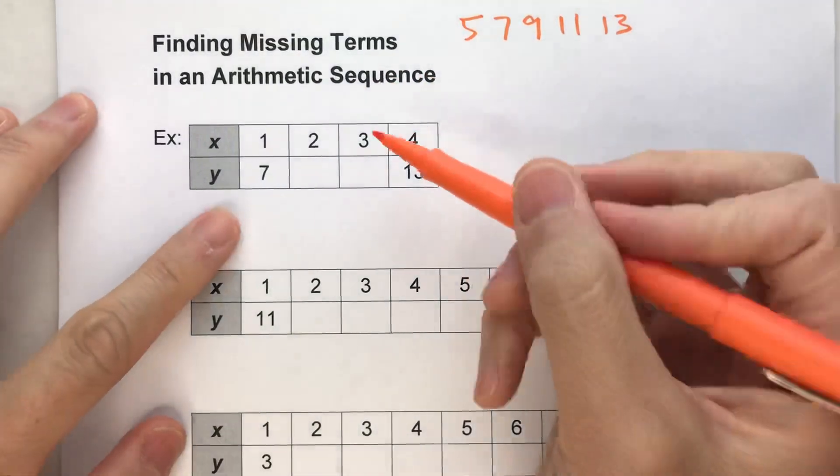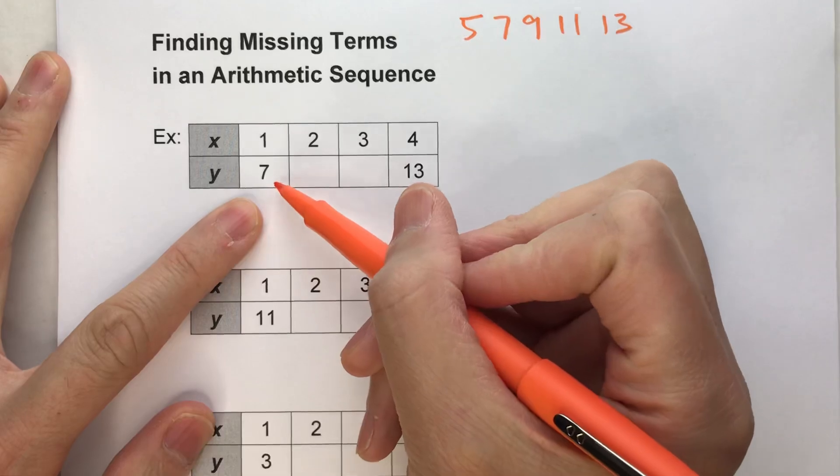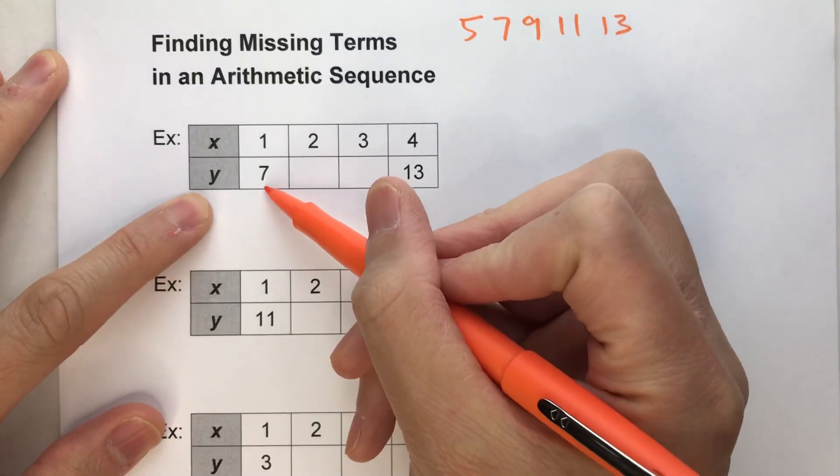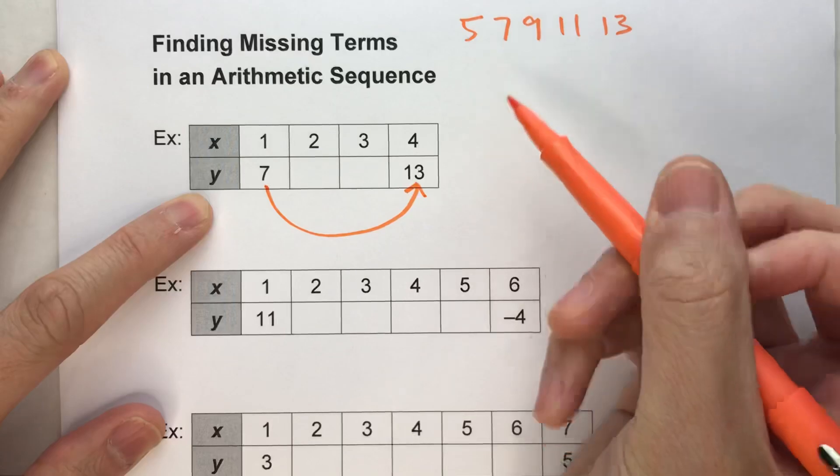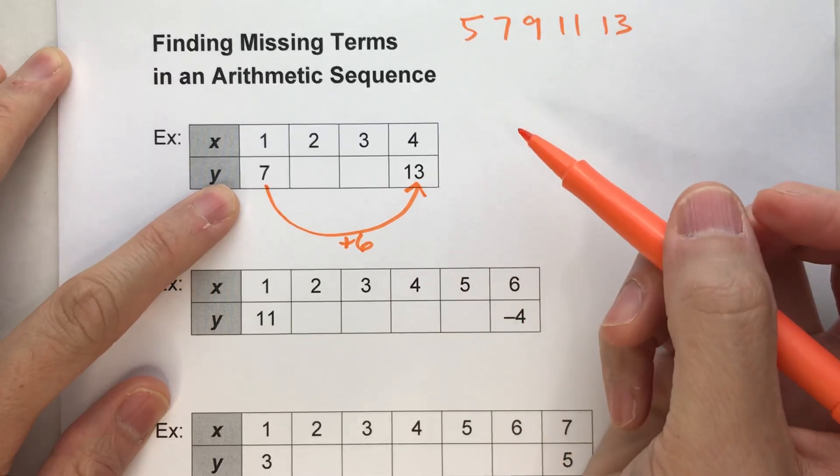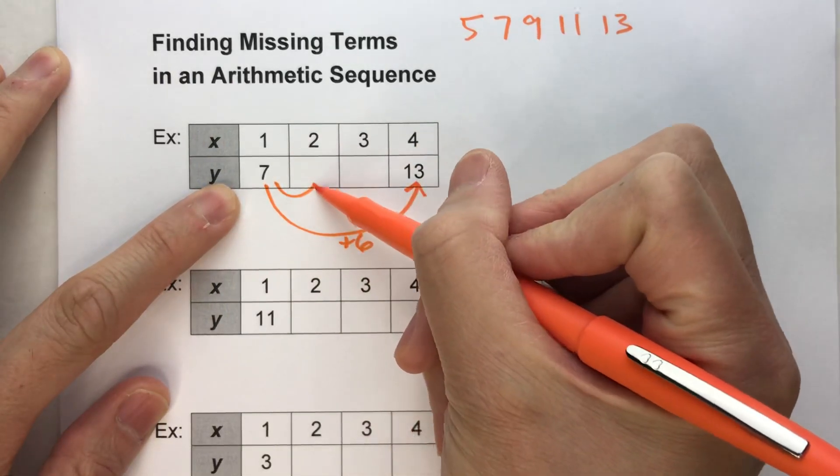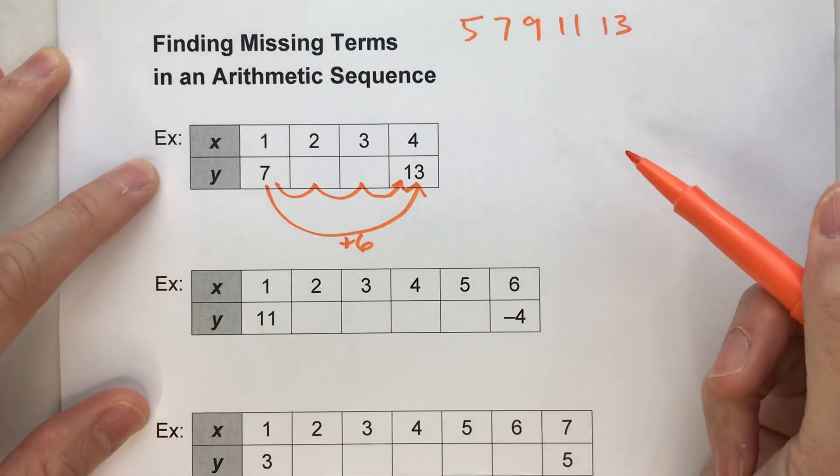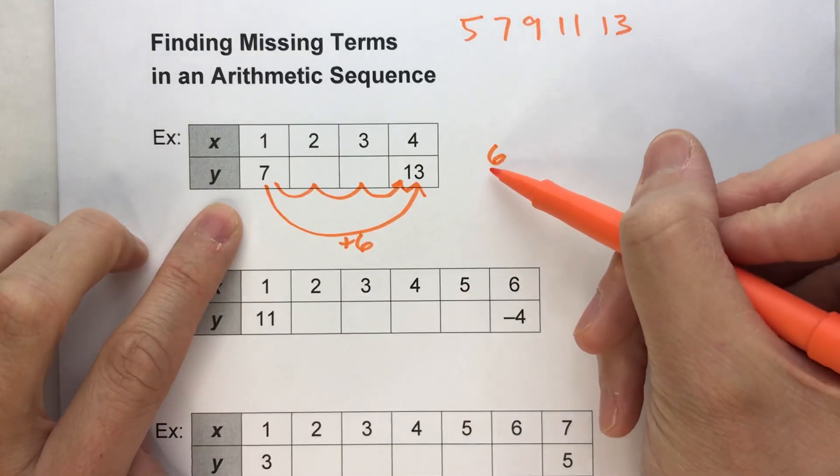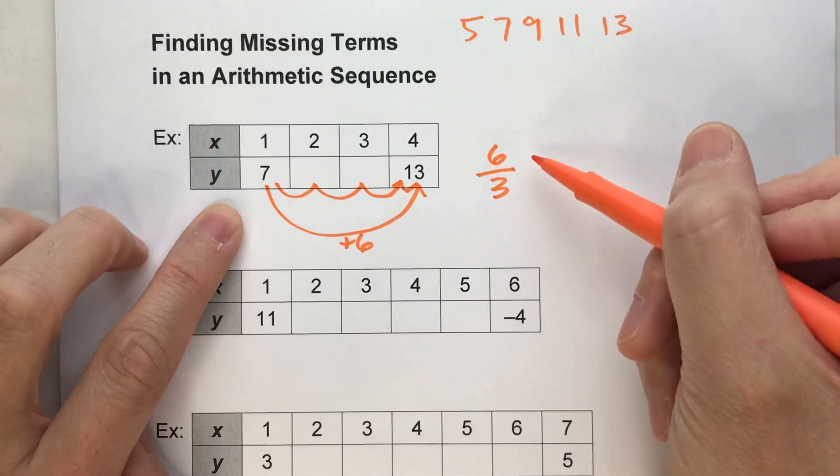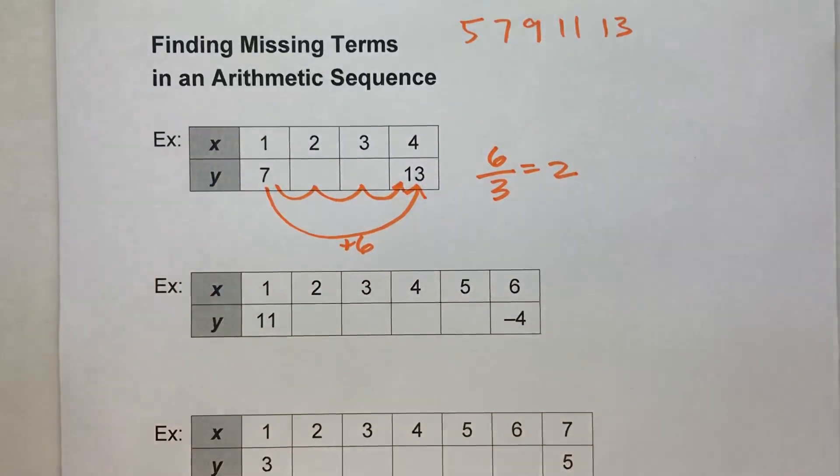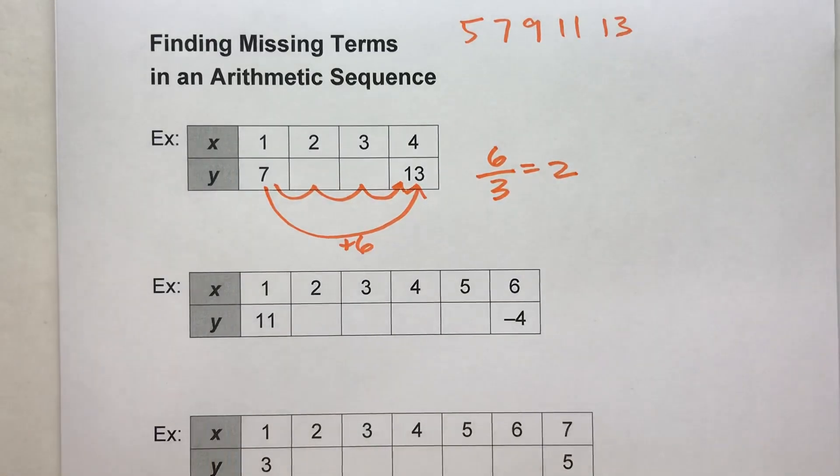Here's an intuitive way to do it. So the first number in our sequence is 7. We don't know the second and third, but we know the fourth number is 13. So we know that it went from 7 to 13. So the sequence increased by 6. But it increased by 6 in 1, 2, 3 steps. So if it went up 6 in 3 steps, we could do 6 divided by 3 to figure out how much it's going up per step. 6 divided by 3 steps gets you 2, which tells you that the sequence must be increasing by 2 each time.